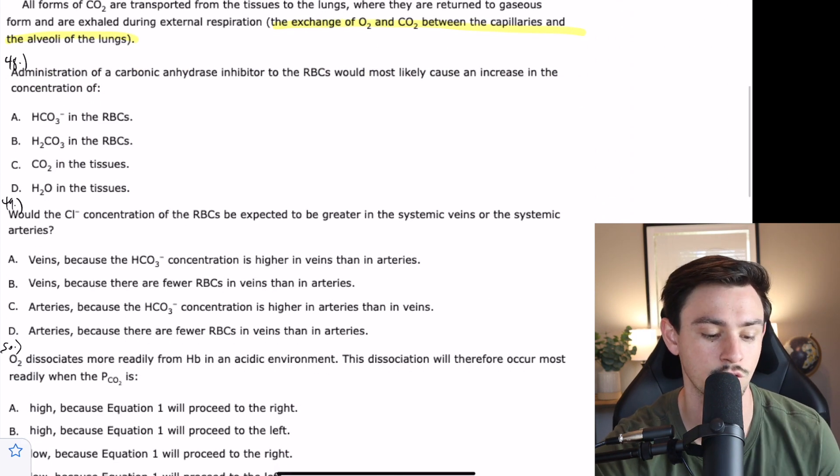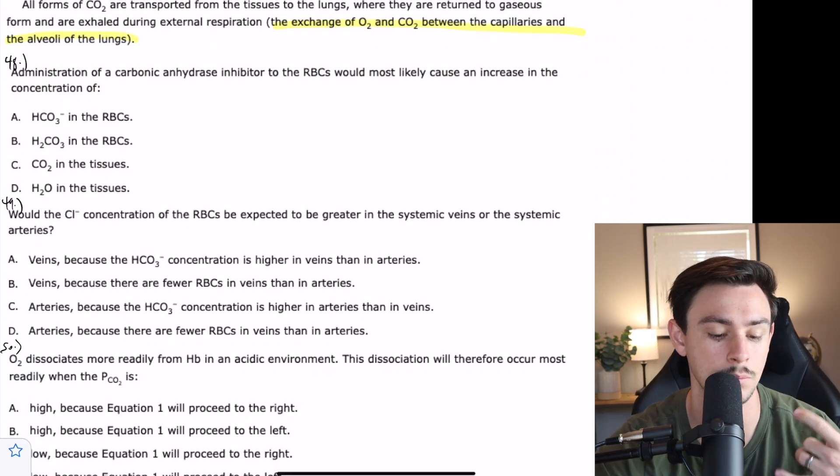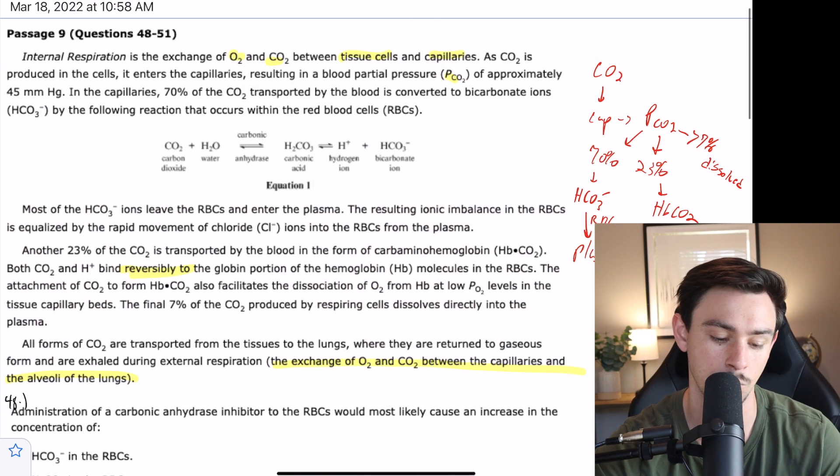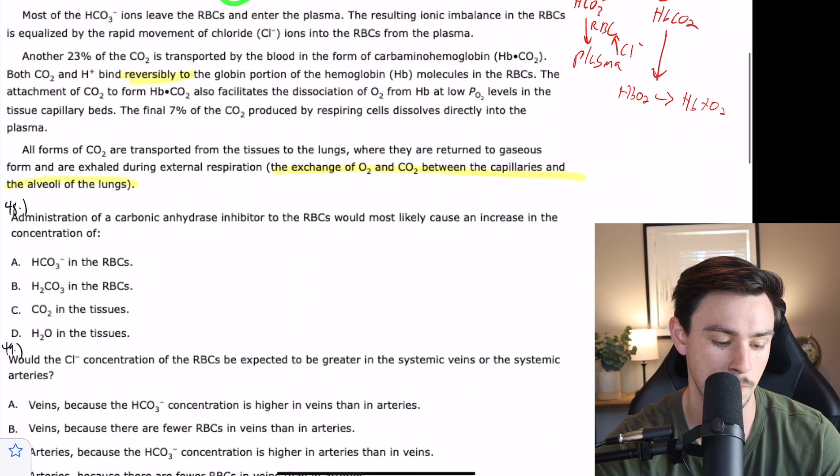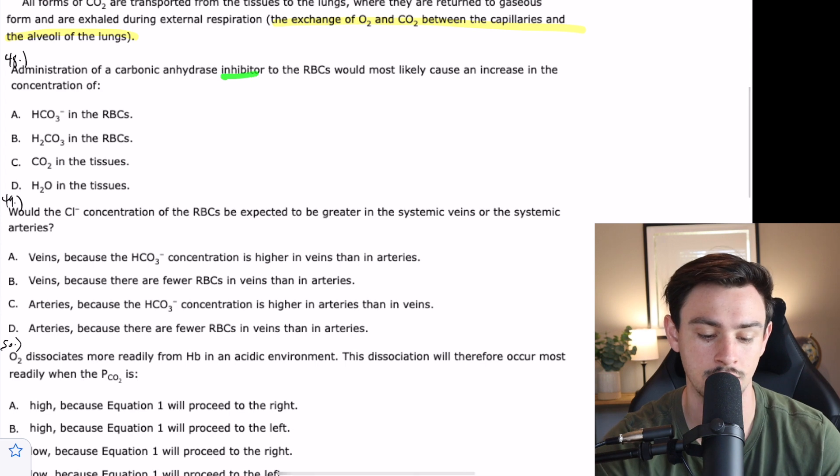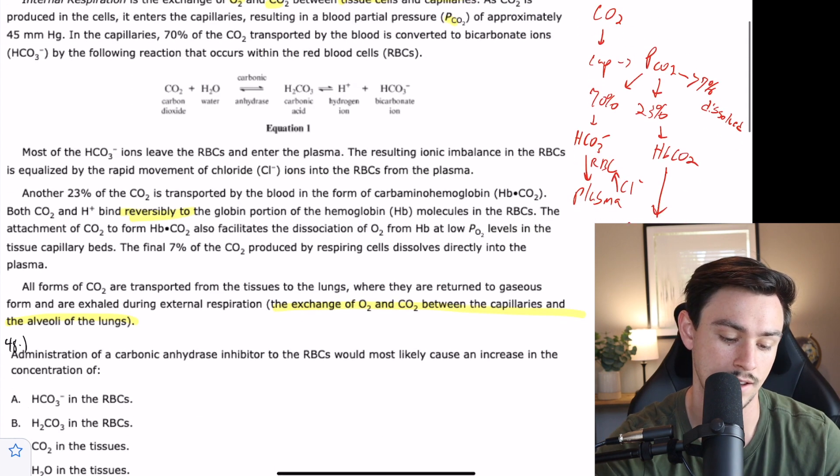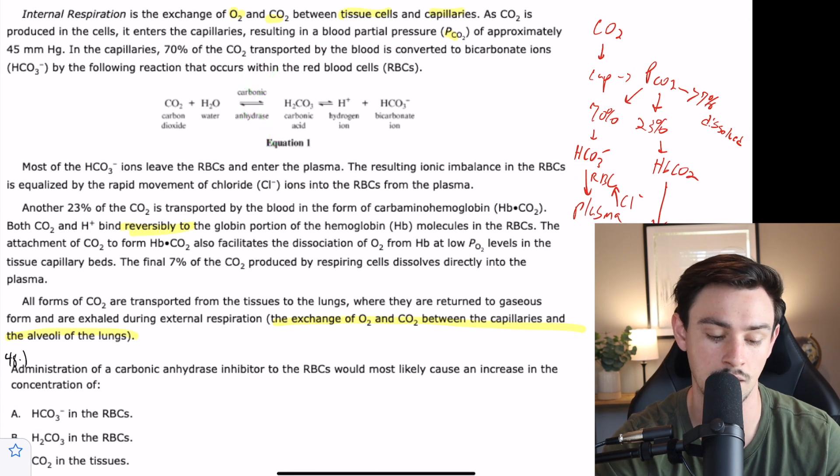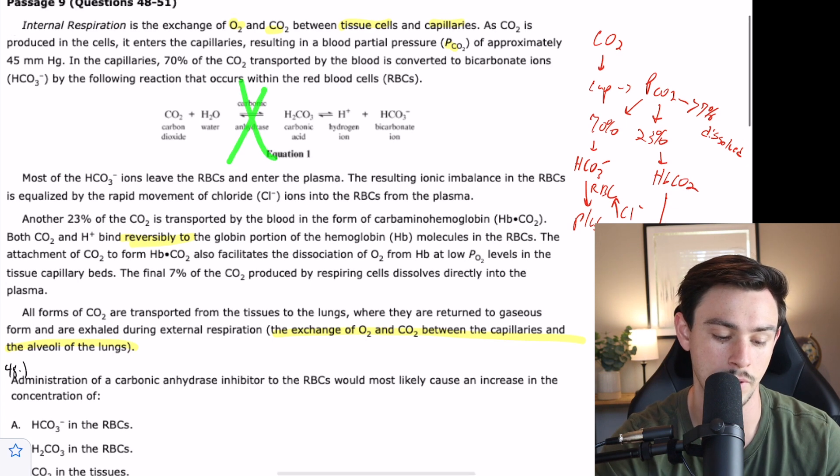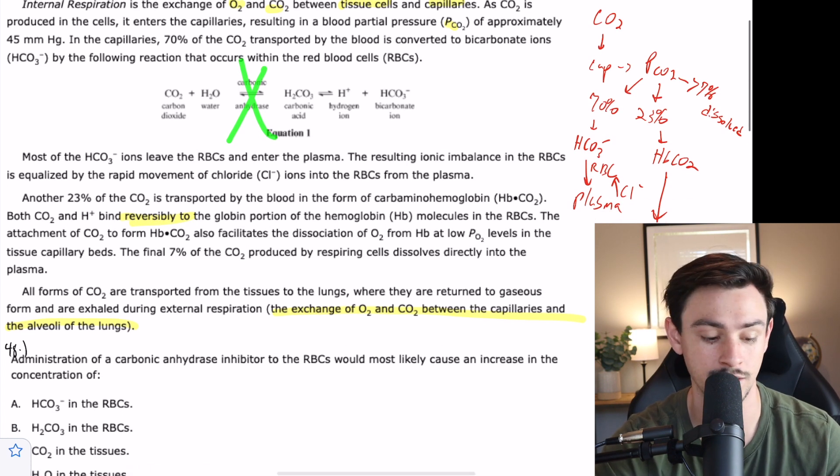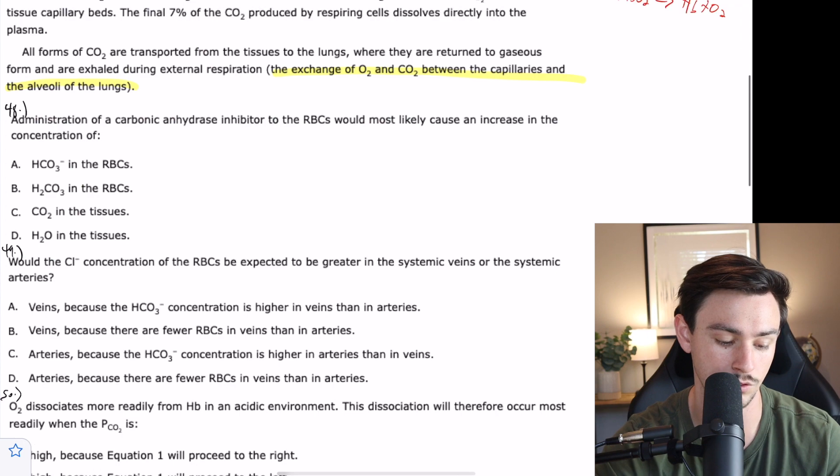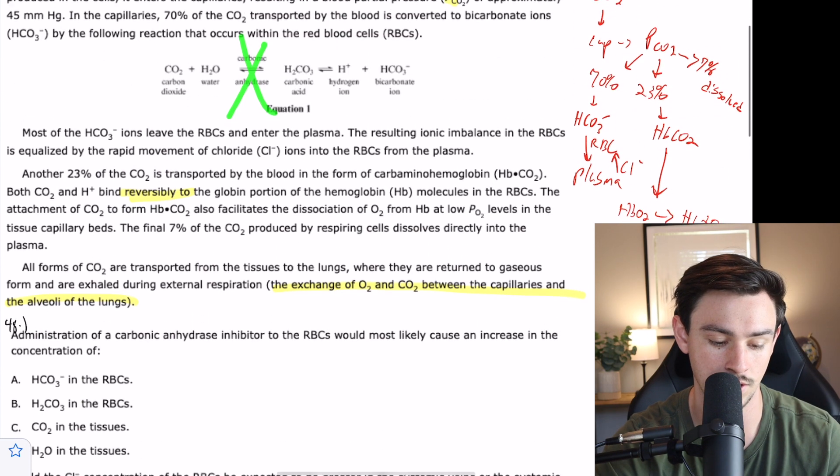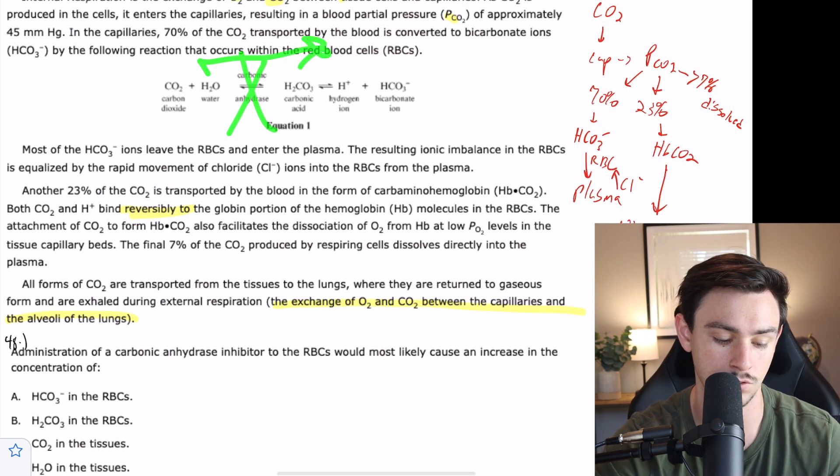Number 48 says administration of a carbonic anhydrase inhibitor, which is that enzyme in equation one. If we use an inhibitor to that, what is that most likely going to cause an increase of? I'm going to rephrase that as, what if I stop this reaction from happening? What's going to end up accumulating? Is bicarb going to accumulate in the red blood cells? No, because we can't get to bicarb.